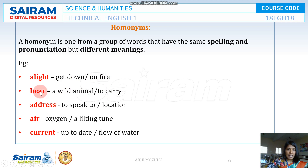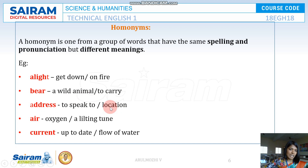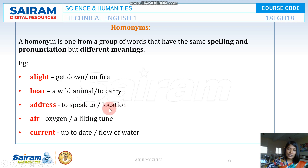The next homonym is BEAR — it can mean the animal, or to bear with something meaning to be patient and carry on. For example, kindly bear this, meaning kindly carry this. ADDRESS can mean to speak, as in 'the principal has to address today,' or the location of somebody's house, as in 'could you please give me your address?'